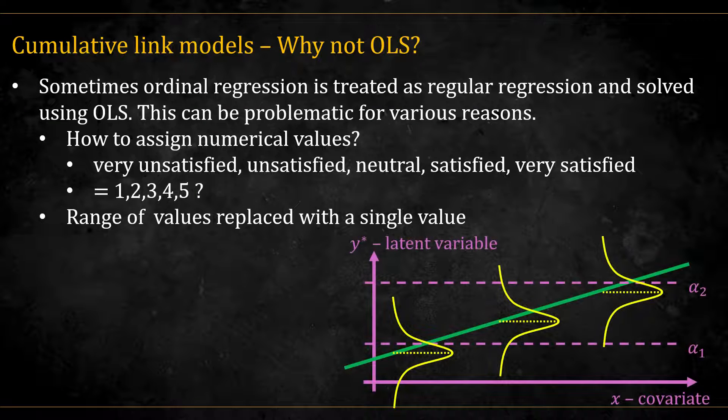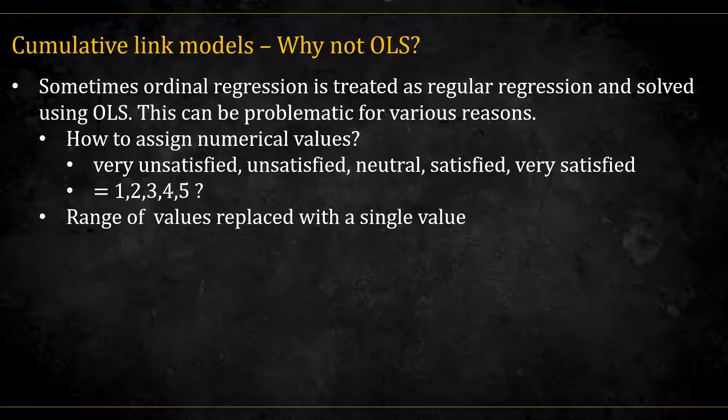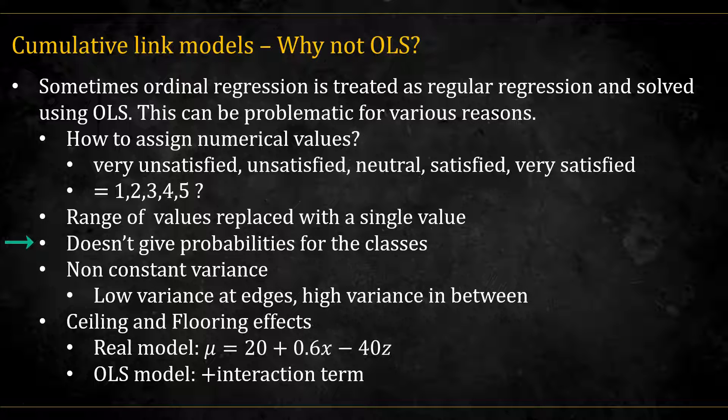The second problem is that, as we've seen in the latent variable analysis, there can be a range of y star values that correspond to a certain category. For example, we have all this range of y star for the value y equal 2. But if we use OLS, this range will be replaced with a single value. This tends to inflate the residual standard error and also affects the regression coefficients. Another con is that OLS doesn't give probabilities for the different classes. And another one is that the variance isn't constant. Assuming a latent variable model, there are low variance at the edge cases and higher variance in between. And another problem which relates to all of the above is ceiling and flooring effects.